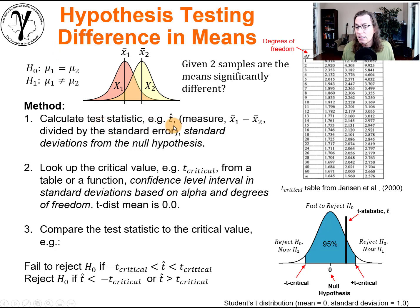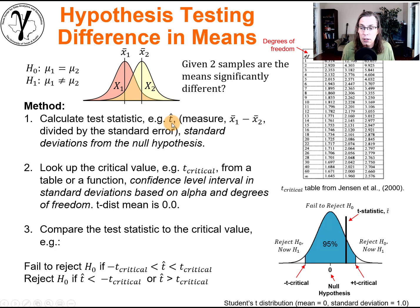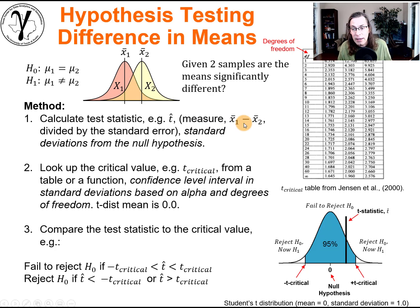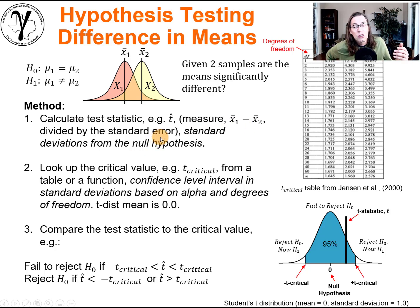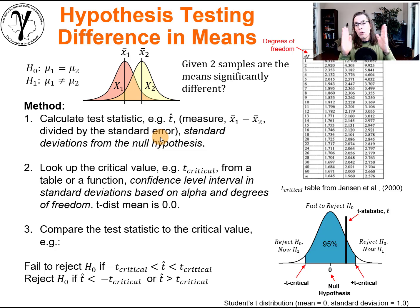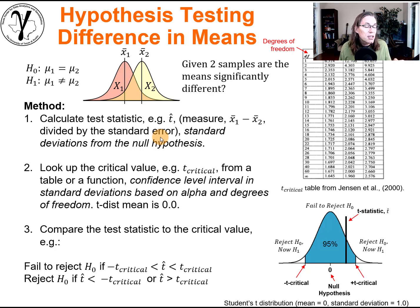We're going to calculate a test statistic — we'll use the t-statistic from the Student t-distribution. It will be the measure, which is the difference in the means, divided by the standard error. The standard error is really cool because it's the dispersion we would expect on the theoretical sampling distribution for the same problem with the same number of samples.